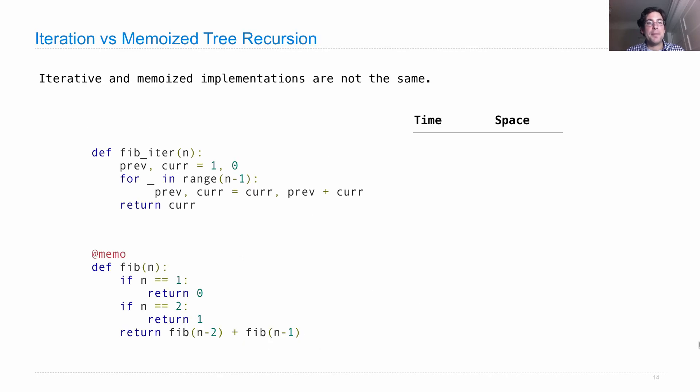Let's look at some examples. We looked at memoization, which is a way of making recursive functions faster, and we also looked at iteration. Here's two different ways to compute Fibonacci numbers. An iterative implementation just starts with previous and current. Then for n minus one times we replace previous and current with the current and the sum of the previous and the current as they were before. Then we return the current value. This is a way to compute Fibonacci numbers.